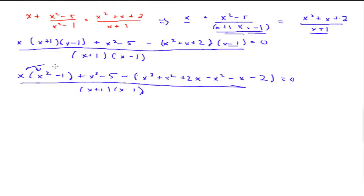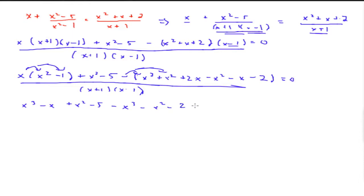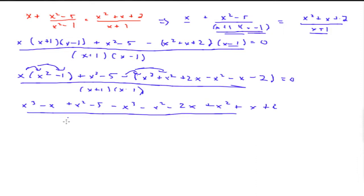All over the common denominator of x plus 1, x minus 1. Next, I'm going to expand these as well, so that gives me x cubed minus x plus x squared minus 5. And now I'm going to expand the negative out within the bracket, so it'll be negative x cubed minus x squared minus 2x, plus x squared plus x plus 2, all over the common denominator of x plus 1, x minus 1, and the whole equation is equal to 0.